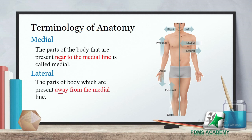وہ body کے parts جو medial line کے قریب ہوتے ہیں ان کو ہم medial parts کہتے ہیں اور وہ parts جو medial line سے دور ہوتے ہیں ان کو ہم lateral parts کہتے ہیں۔ For example، arm کے اندر humerus، radius اور ulna lateral ہیں، جبکہ heart جو medial line کے قریب ہے وہ medial ہے۔